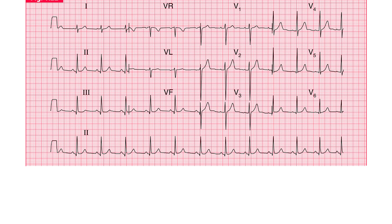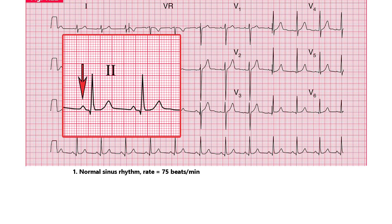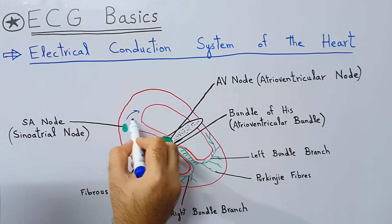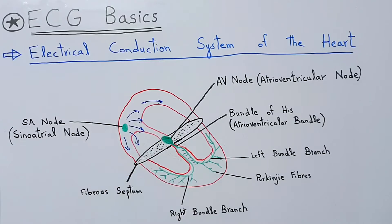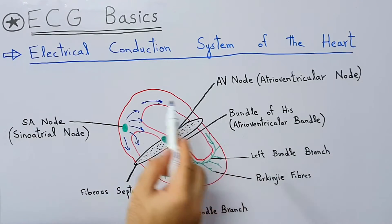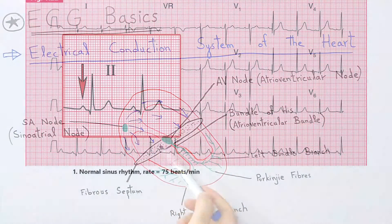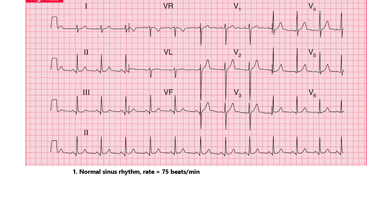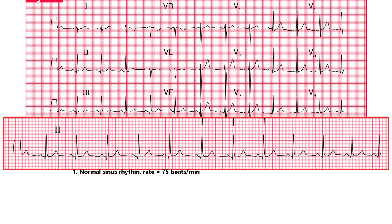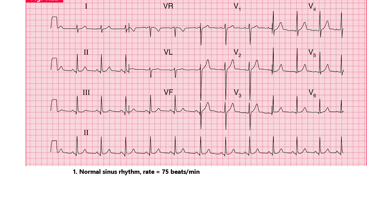This is a normal ECG. Let's report it. We will write down point number 1 as normal sinus rhythm, rate equal to 75 beats per minute. Sinus rhythm means that P waves are present before QRS complexes. P waves are formed when the sinus node initiates an electrical signal that spreads into the atria, meaning the sinus node is controlling the heart rate. Note that QRS complexes are equally spaced in the bottom rhythm strip, which shows that the rhythm is regular.